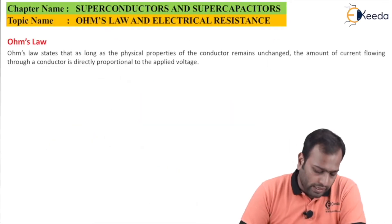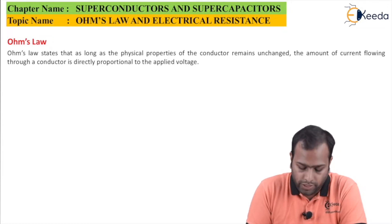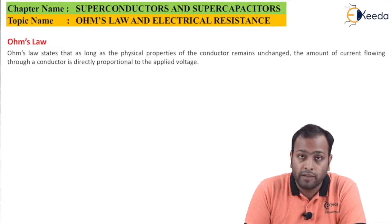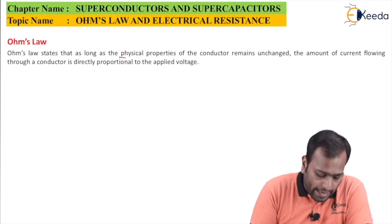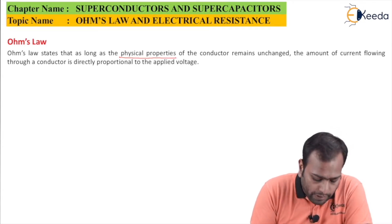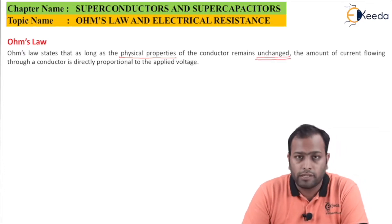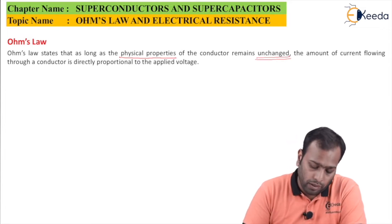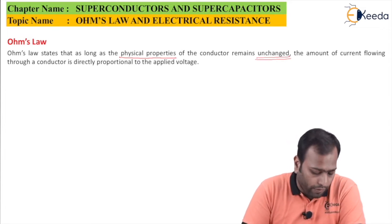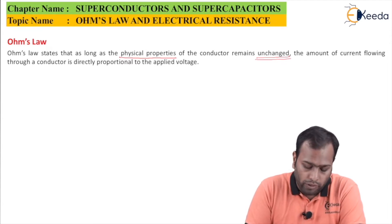Ohm's law states that as long as the physical properties of the conductor remain unchanged — which means you are not allowed to change physical properties such as temperature and its composition — the amount of current flowing through a conductor is directly proportional to the applied voltage.